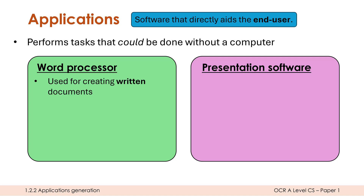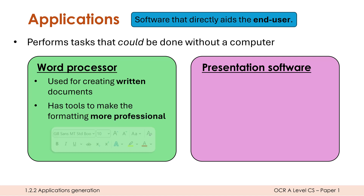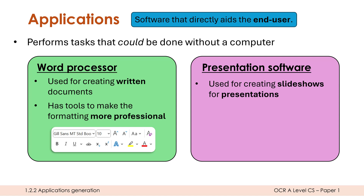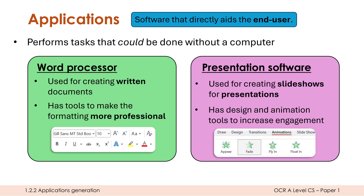Word processors are for creating written documents — think Microsoft Word — and they have loads of tools to make formatting more professional. Presentation software is used for creating slideshows or presentations, with animation and design tools built in to make it more engaging. As I'm showing you right now, there are colors, fades, and transitions. You could produce a written document or a presentation without these programs, which is why they're application software, not system software.